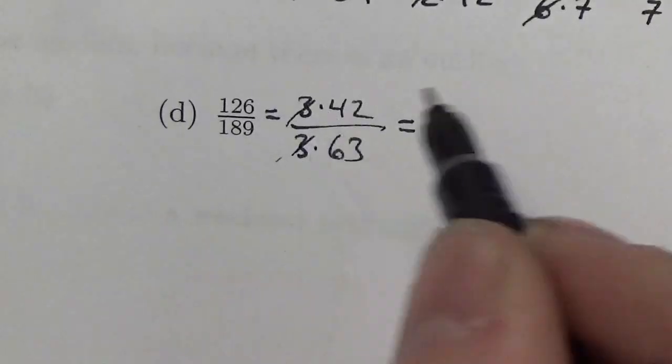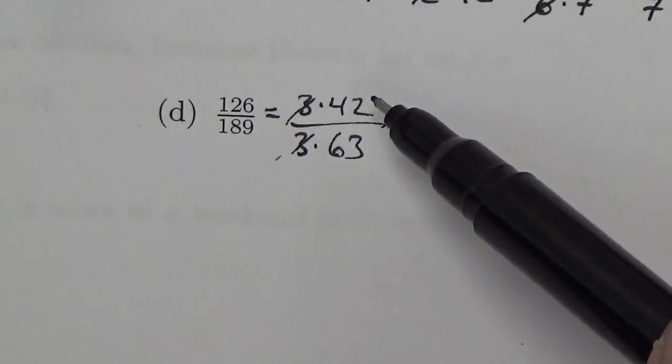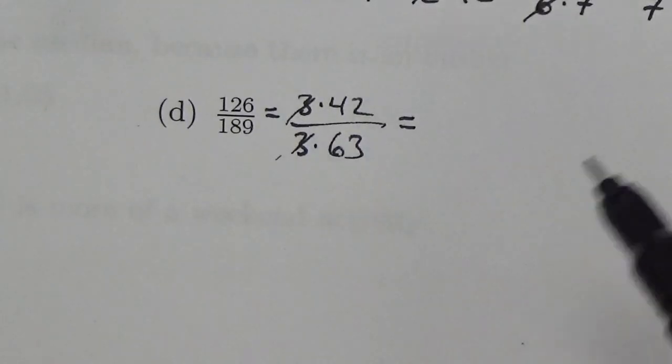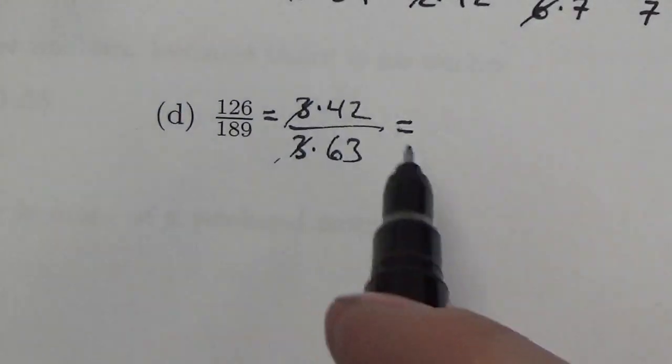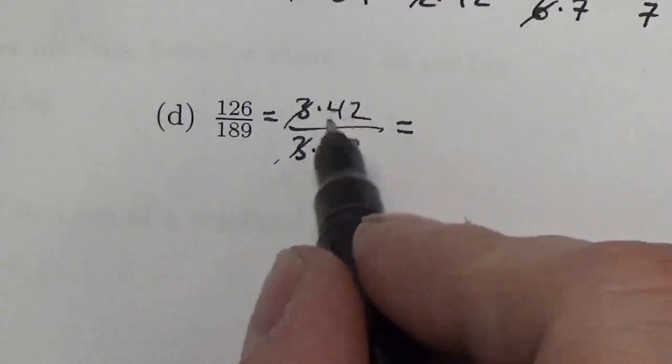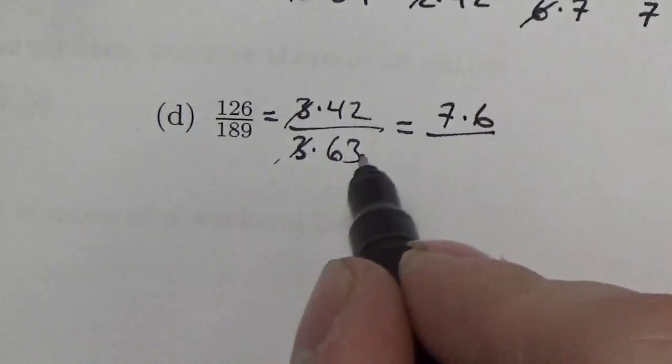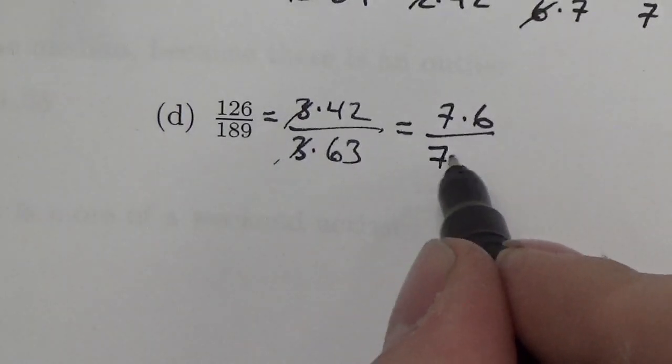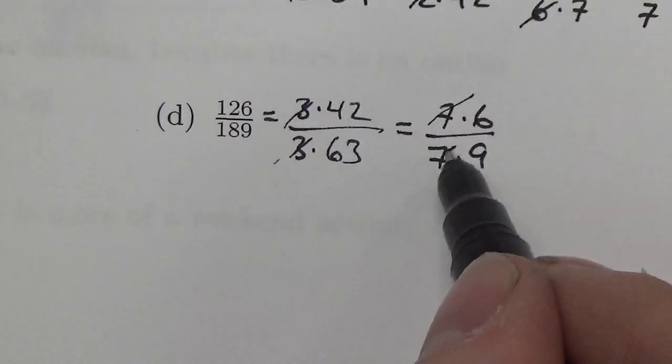Well, I can cancel those 3s there. And now I try it again. Now, once again, I'm still left with an even over a number that's not even. Actually, you know what? Based on what we just did over here in a previous question, when I look at 42, I recognize that that is going to be 7 times 6. And I recognize that 63 is going to be 7 times 9. So I actually can take a bit more of a jump there and take those out.